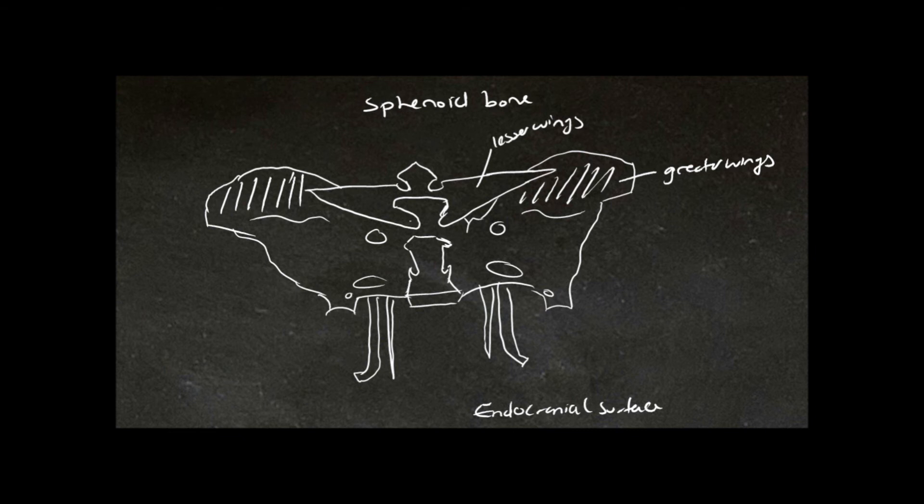In the center of the sphenoid bone we have a depression. This is where the pituitary gland of the brain sits, and it is bounded by processes. The anterior ones are called anterior clinoid processes.